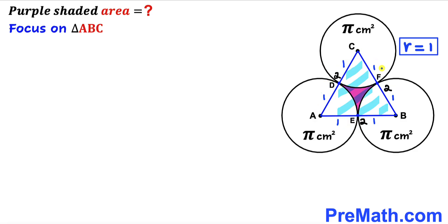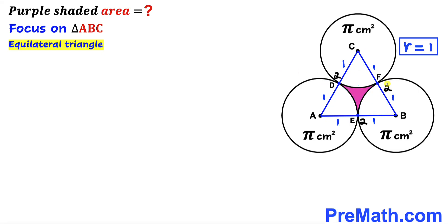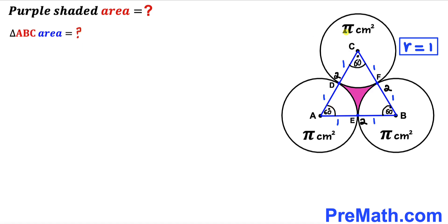Now let's focus on the blue shaded triangle ABC. We can see that this is an equilateral triangle since all side lengths are 2 centimeters each. Since this is an equilateral triangle, all interior angles are congruent. The sum of interior angles in a triangle is 180 degrees, so each angle is 60 degrees.